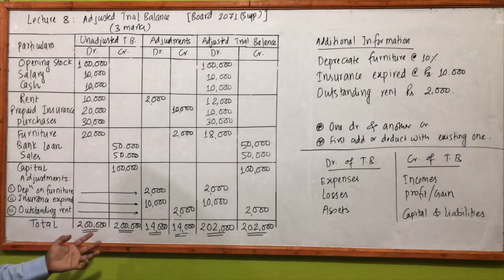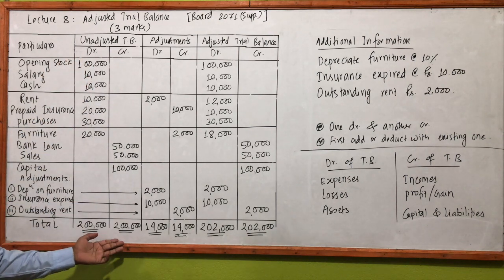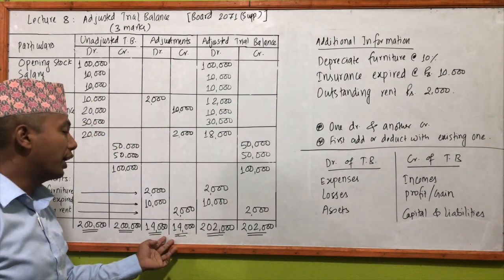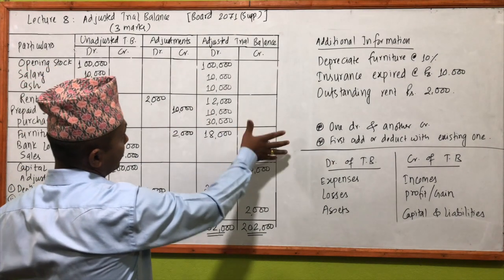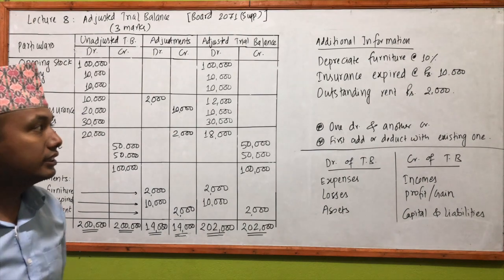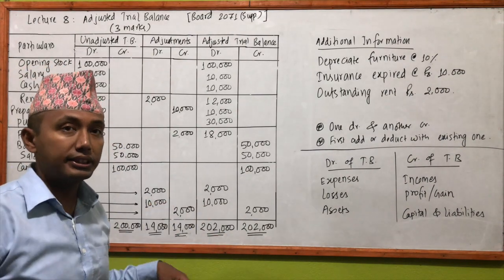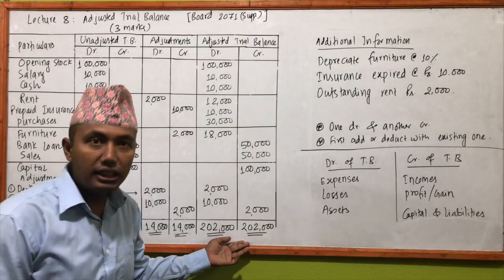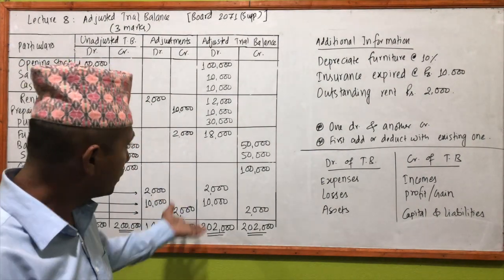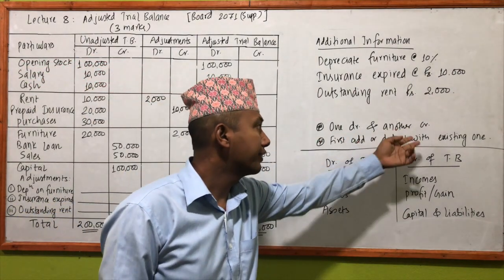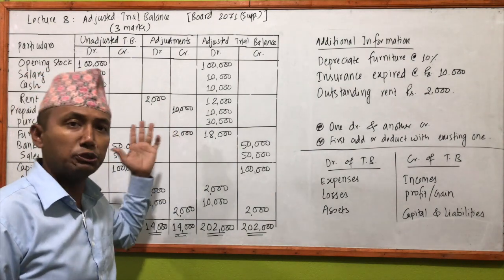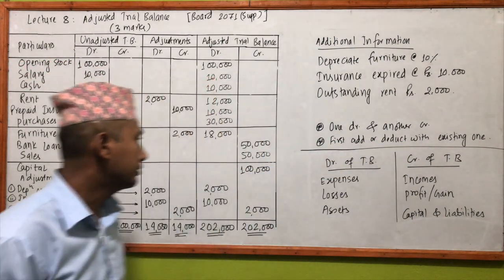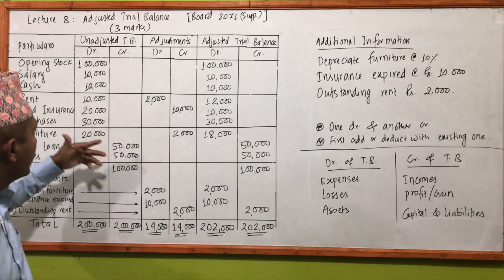Last point: the sum must be equal. On the unadjusted trial balance, the equation is equal. After adjustment, the adjusted trial balance debit and credit must also be equal. The adjustment point is: one debit and one credit. Consider first whether to add or deduct with the existing balance — make corrections accordingly.